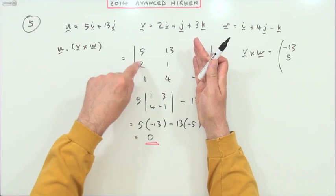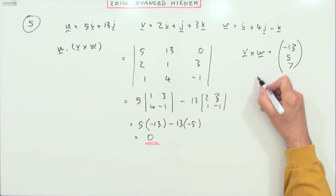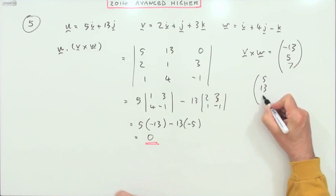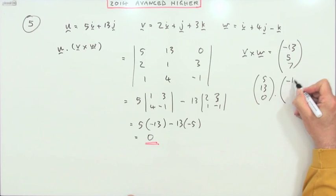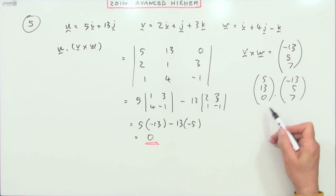But take away that and then a 5, and if that was the k there that would have been 8 take away 1 which would have been a 7. You'd have had that and then you'd have done the scalar product of 5, 13, 0 dot negative 13, 5, 7 to give you exactly the same result to give you a zero.